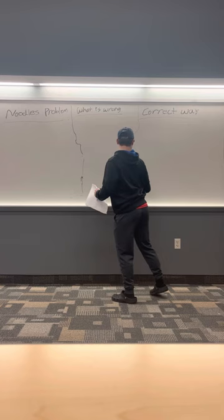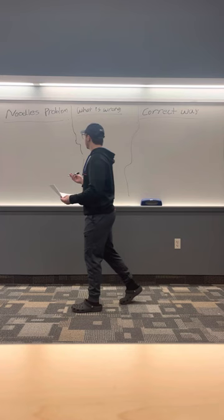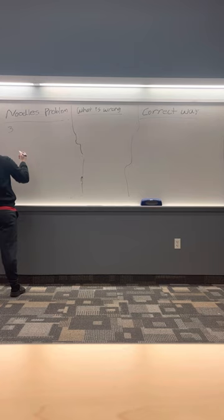Here is the next problem. I'll first be showing you how Noodle solved it. The problem is 3 times the fifth root of n to the negative 2.